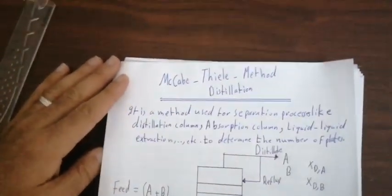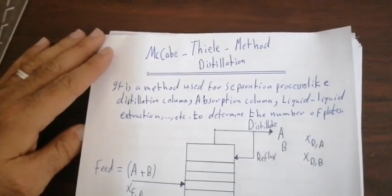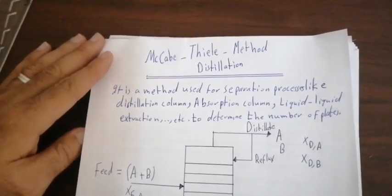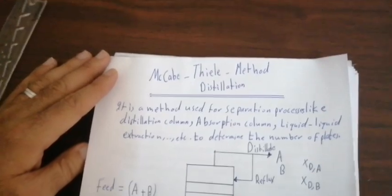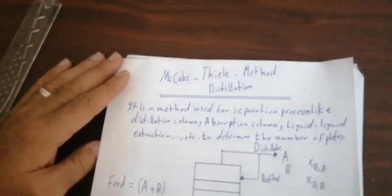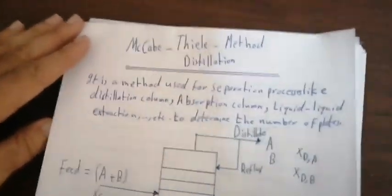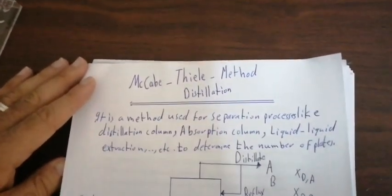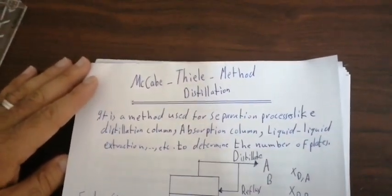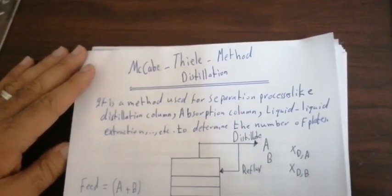Assalamu alaikum and very good day to all of you. Now we will speak about the McCabe-Thiele method. The McCabe-Thiele method is used for distillation. This is a very general method used for separation processes, like distillation columns, absorption columns, and liquid-liquid extraction.